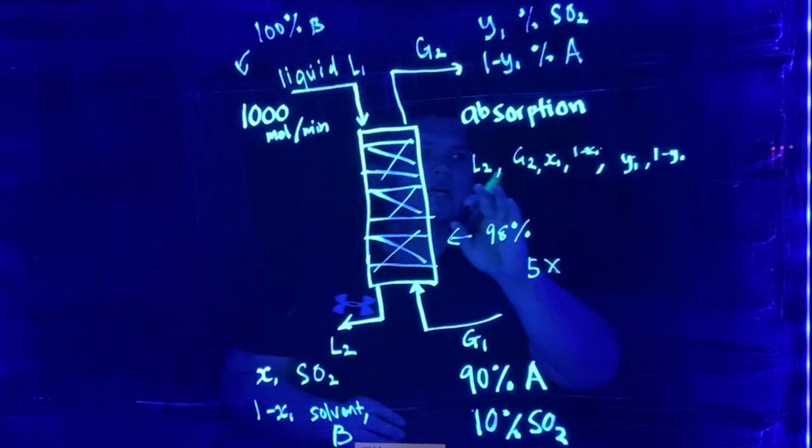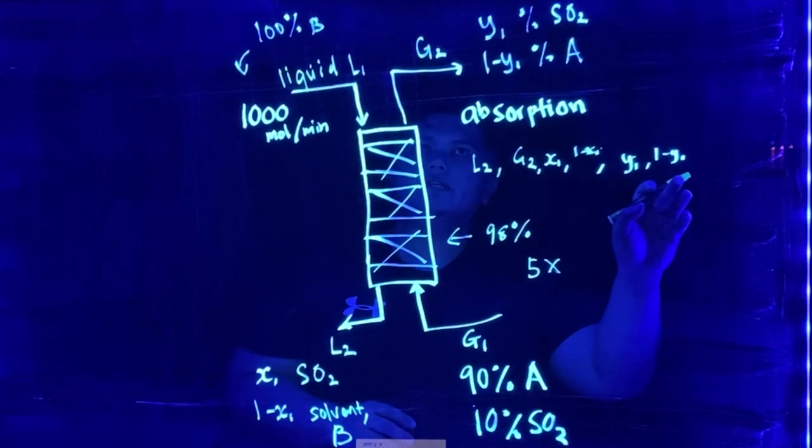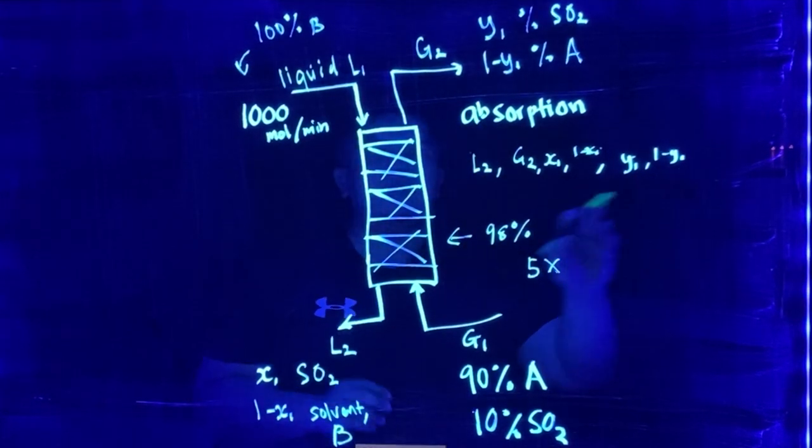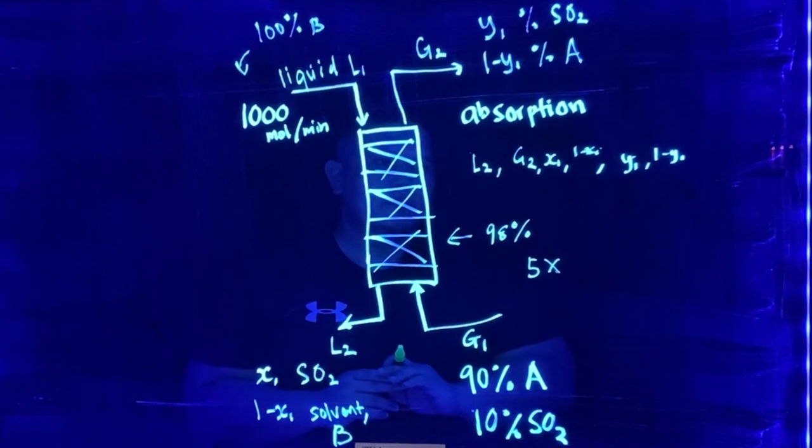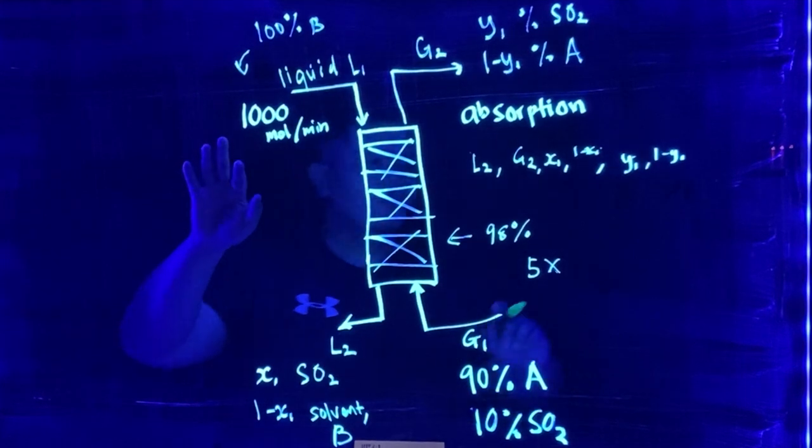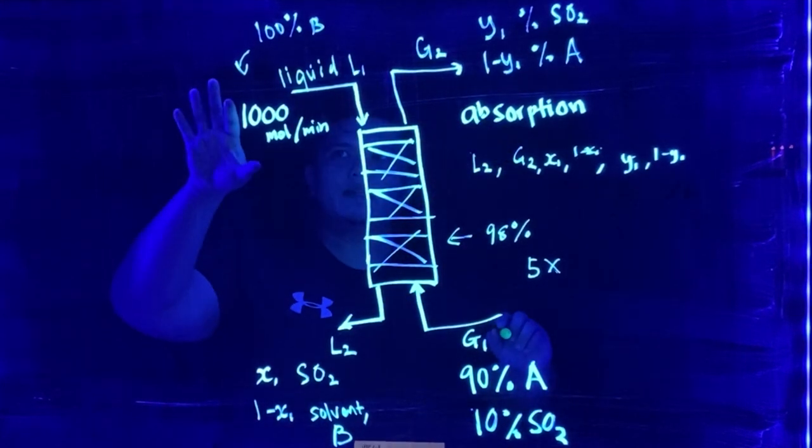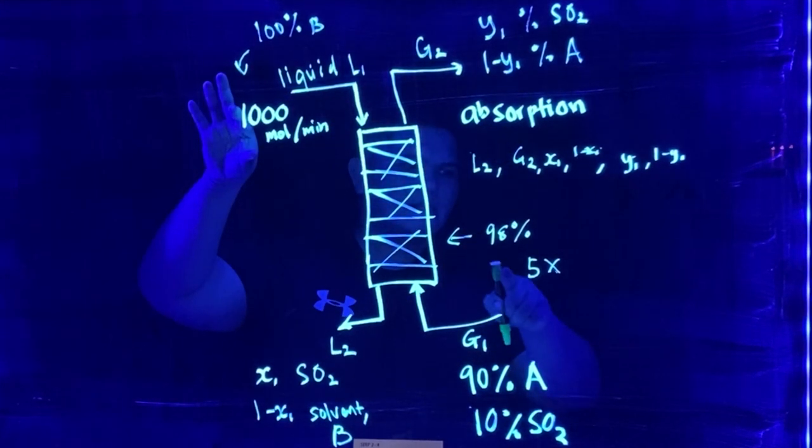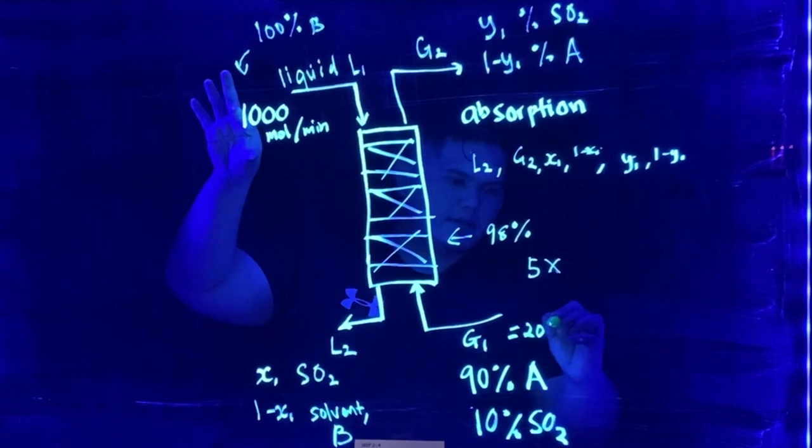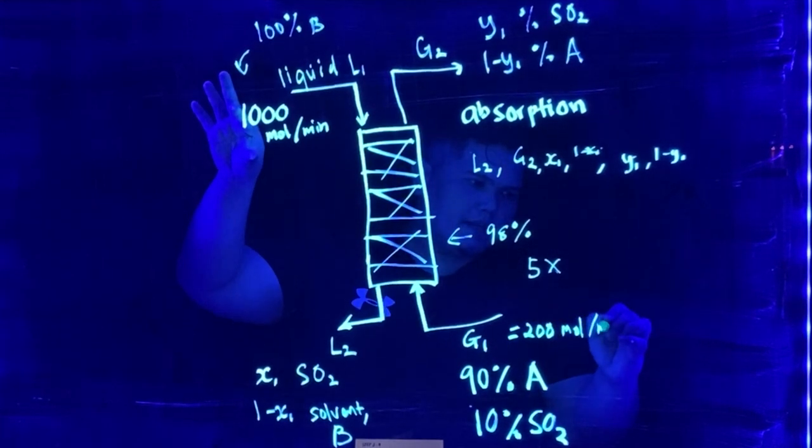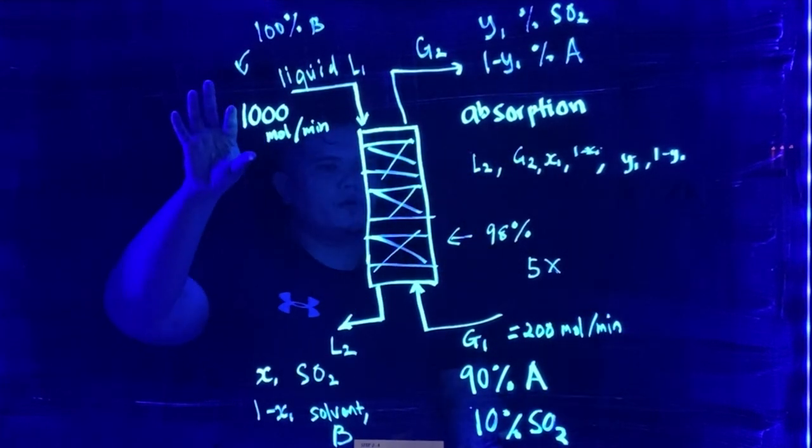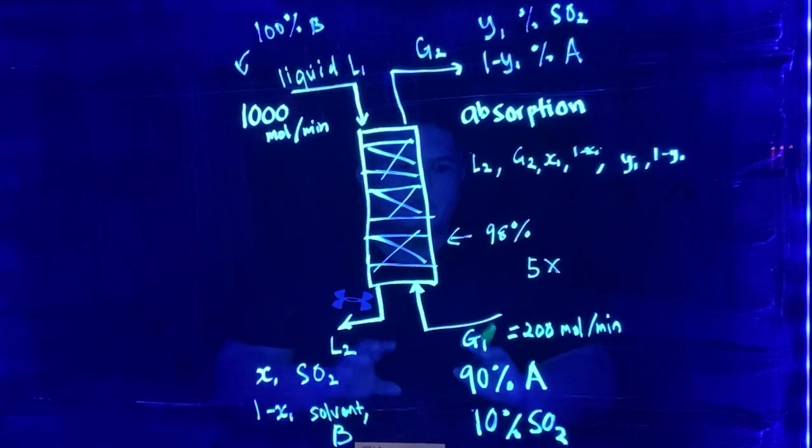So as for now, you can see that there are several unknowns here. And the second one is, if let's say now we assume that this is 1000 mole per minute, then we straight away know that G1 is 5 times lower than this. So this should be 200 mole per minute. So we have this information.